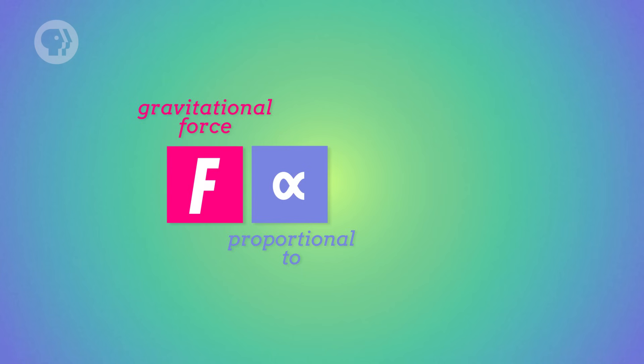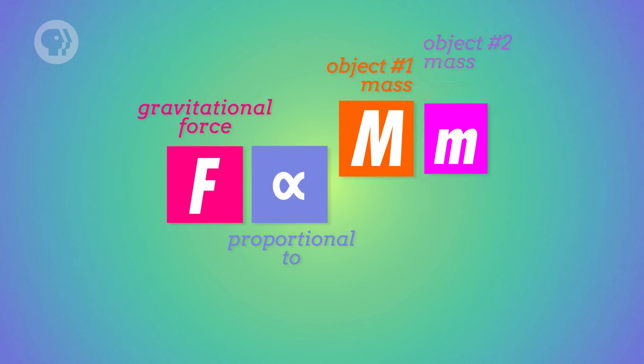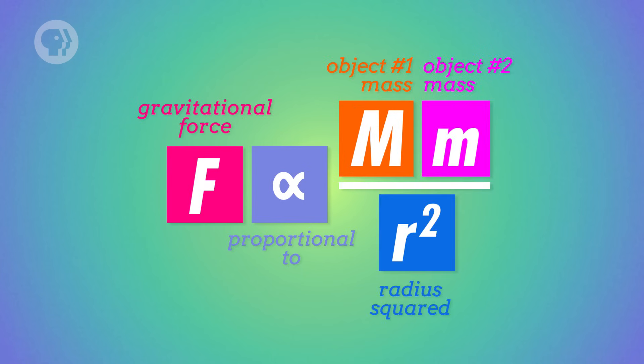Once he had taken into account the distance between two objects and their masses, Newton had most of his equation for the way gravity behaved. The gravitational force was proportional to the mass of the two objects multiplied together, divided by the square of the distance between them. It had to be a lot smaller, or else you'd see a force pulling together most everyday objects. This Rubik's cube is staying right where it is instead of being pulled towards me, so the gravitational force between us must be very small.